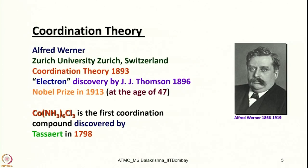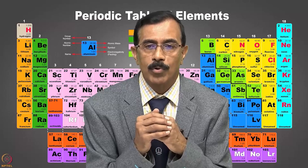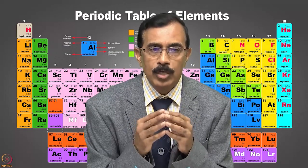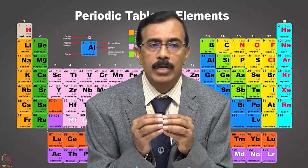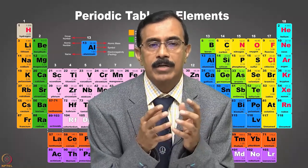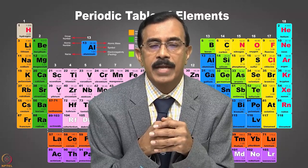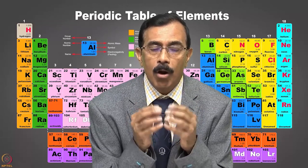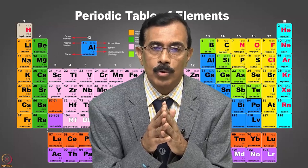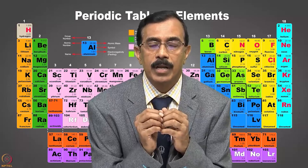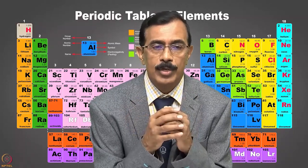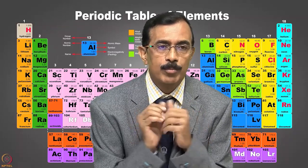It is very appropriate to remember Alfred Werner for his coordination theory. When he started working on coordination compounds — octahedral cobalt compounds and square planar complexes of platinum — there were no analytical or spectroscopic tools available. Not only that, atomic structure was not known and electrons were not even known. He proposed his coordination theory in 1893, but electrons were discovered later by J.J. Thomson in 1897. Nevertheless, he did not leave any stone unturned with his synthetic ability and analytical thinking.